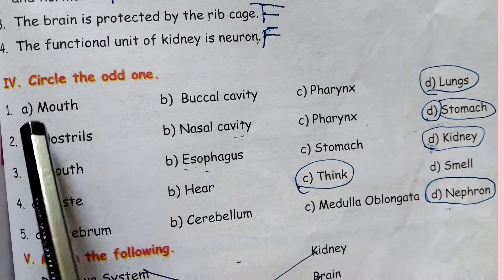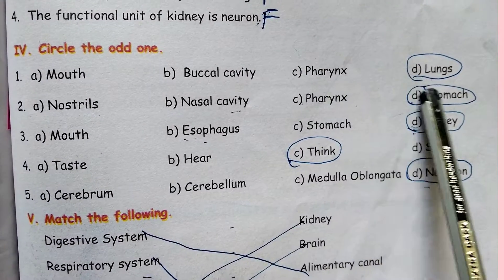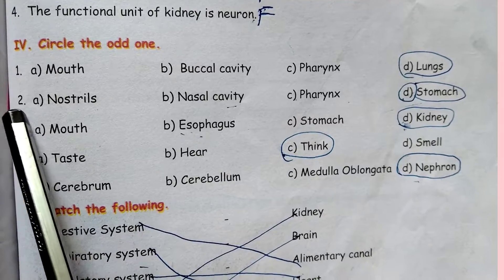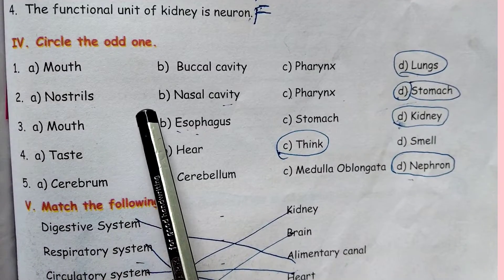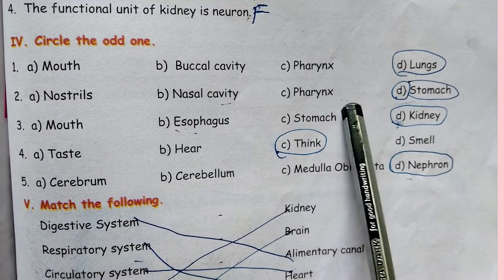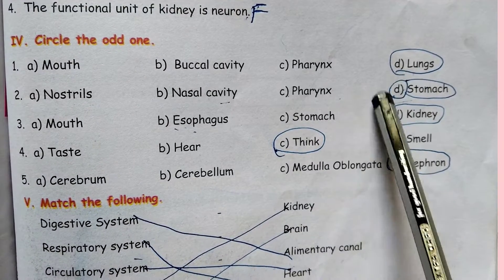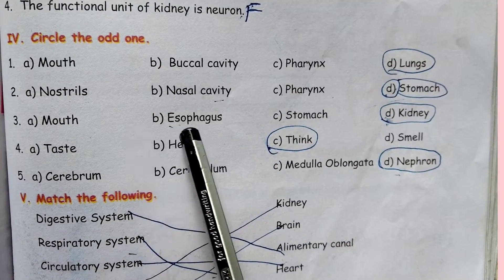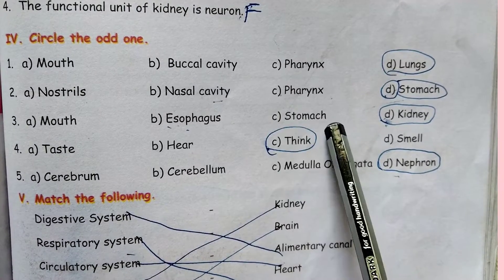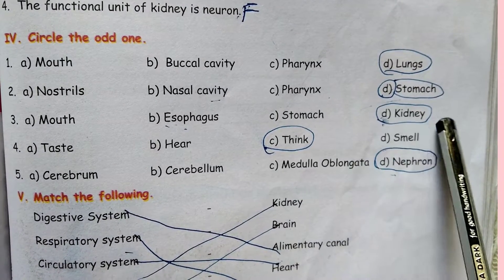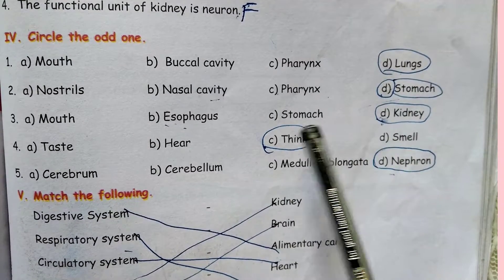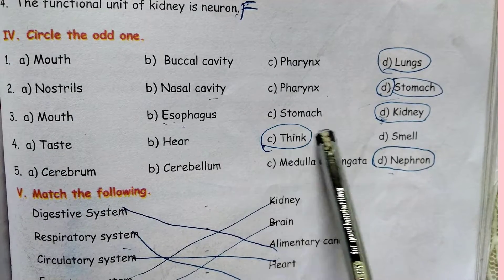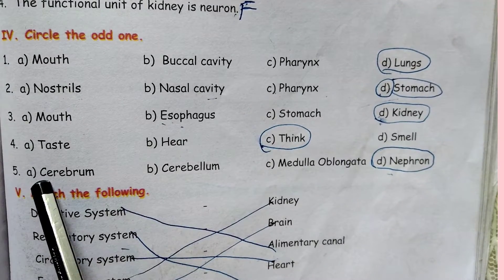Circle the odd one. Mouth, buccal cavity, pharynx, lungs — lungs is the odd one. Nostril, nasal cavity, pharynx, stomach — stomach is the odd one. Mouth, esophagus, stomach, kidney — kidney is the odd one. Taste, hear, think, smell — think is the odd one.